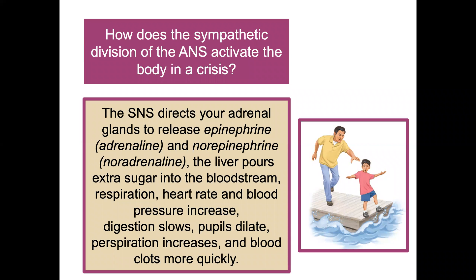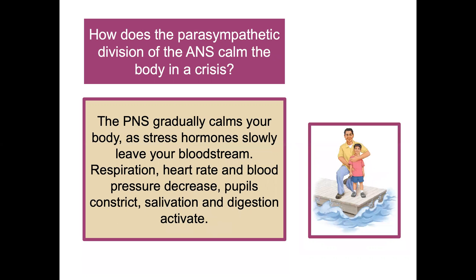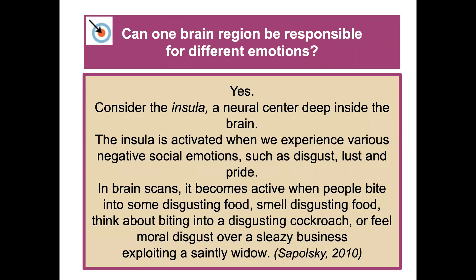The sympathetic division of the ANS activates the body in a crisis: it directs the adrenal glands to release epinephrine and norepinephrine, the liver pours extra sugar into the bloodstream, respiration, heart rate, and blood pressure increase, digestion slows, pupils dilate, perspiration increases, and blood clots more quickly. The parasympathetic division then gradually calms the body — stress hormones leave the bloodstream, heart rate, respiration, and blood pressure decrease, pupils constrict, and digestion resumes.